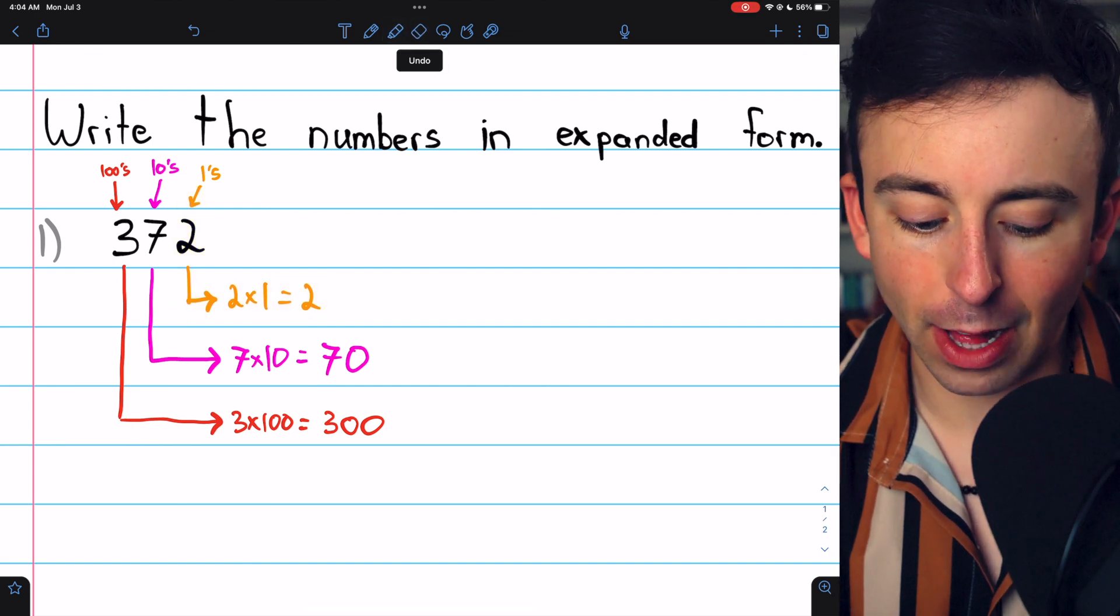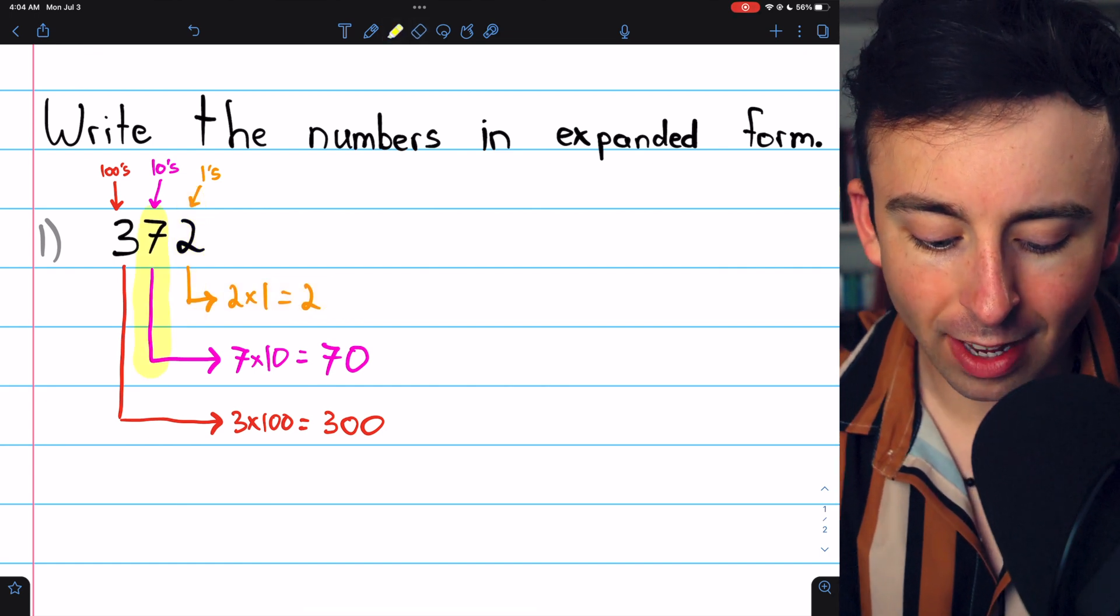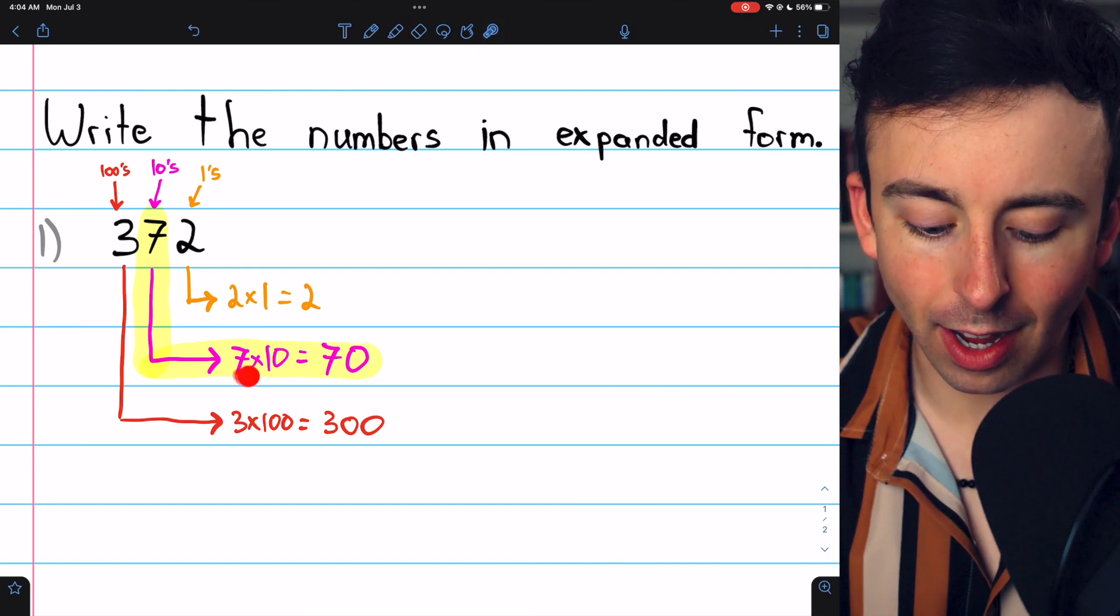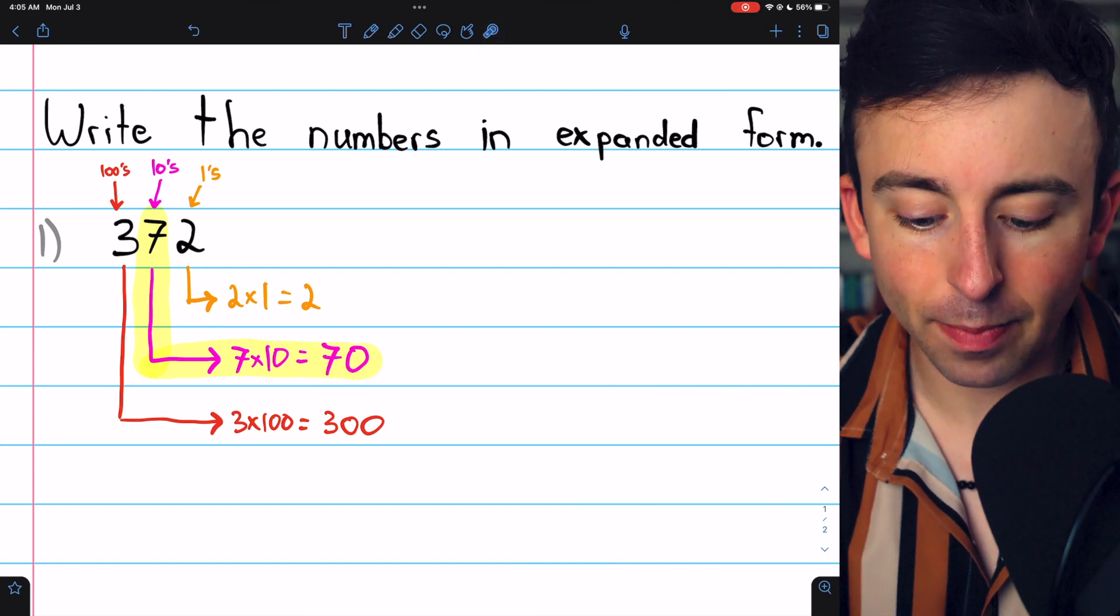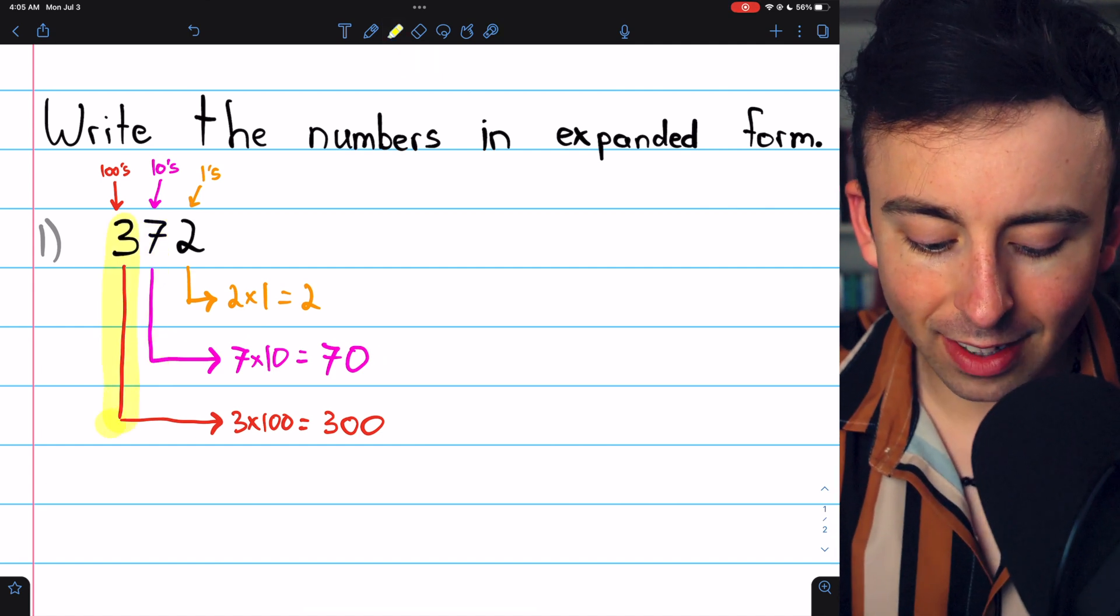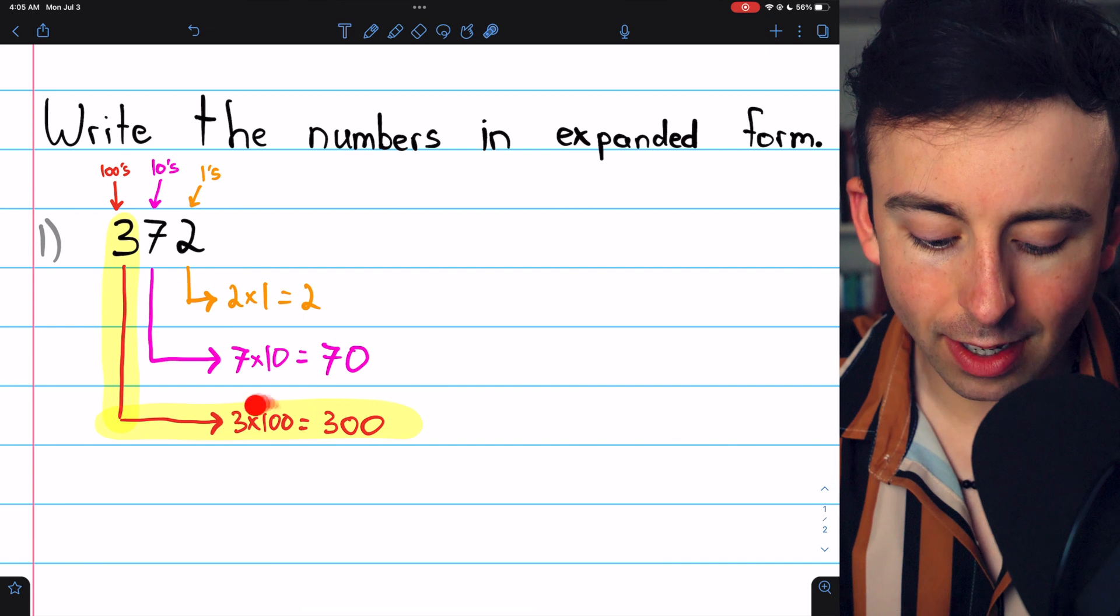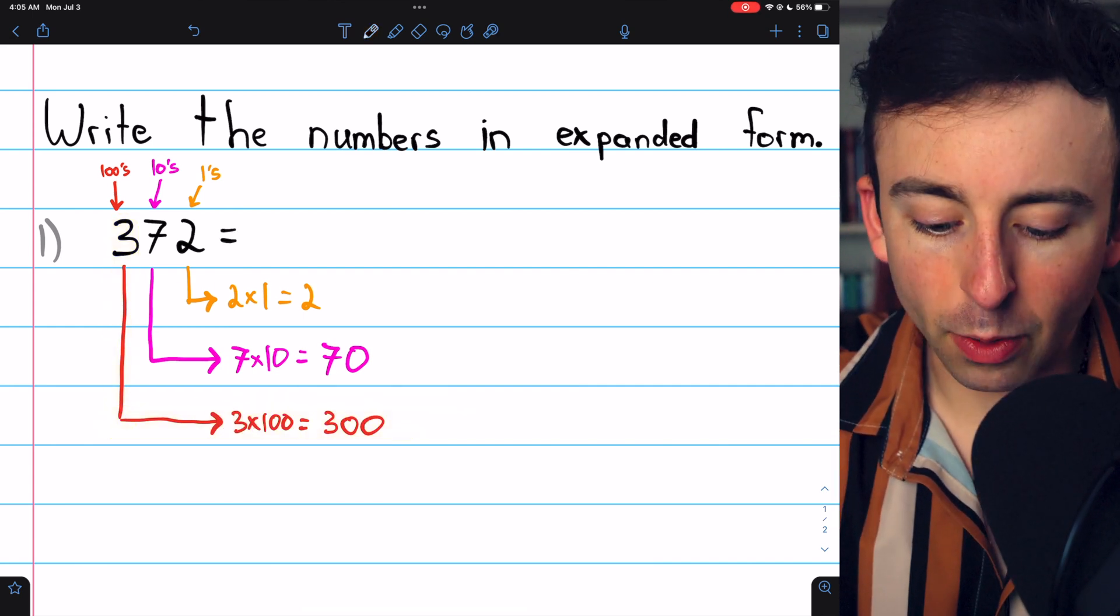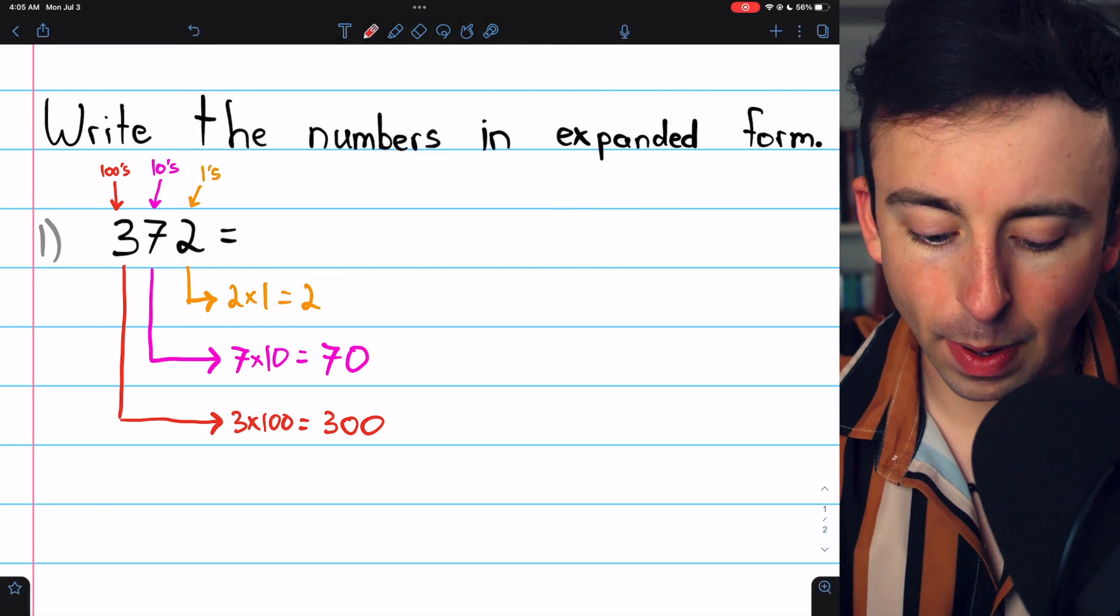The next place value is the 10's place, representing how many 10's we have. In this case, it's 7 times 10, which is 70. The next place value to the left is the 100's place. In this case, we have 3 100's, which is 300. This breakdown allows us to write the number in expanded form.